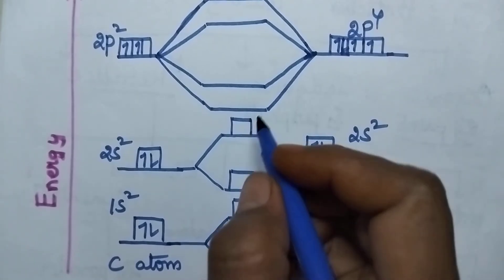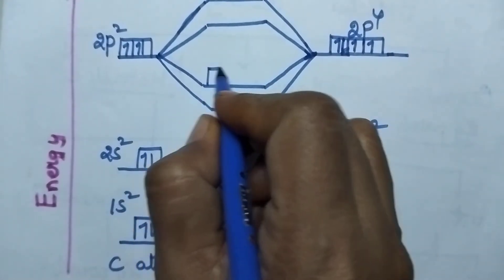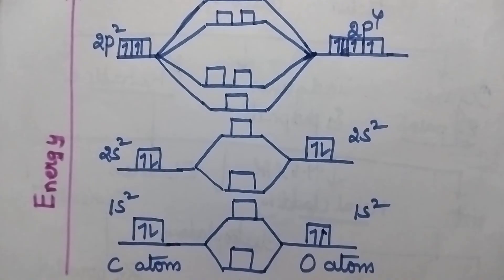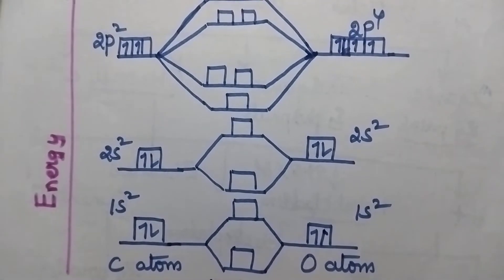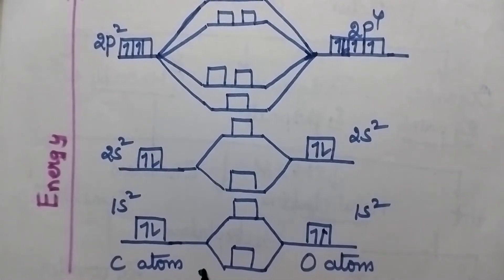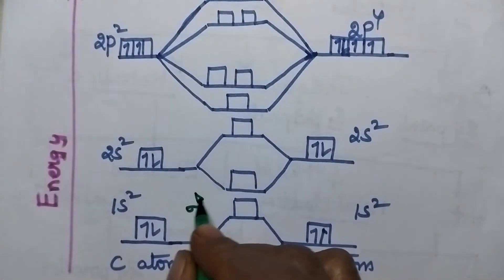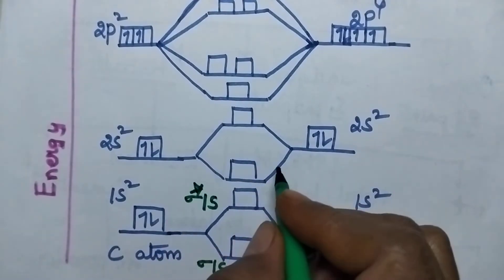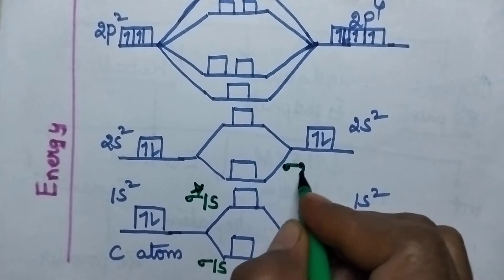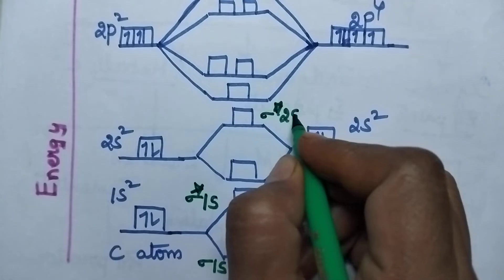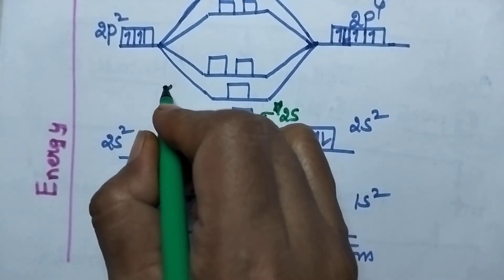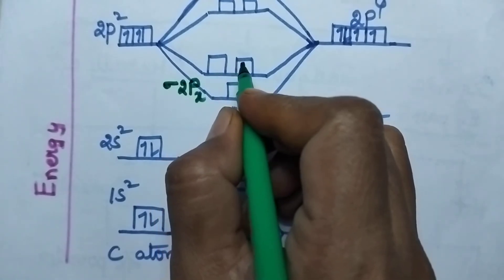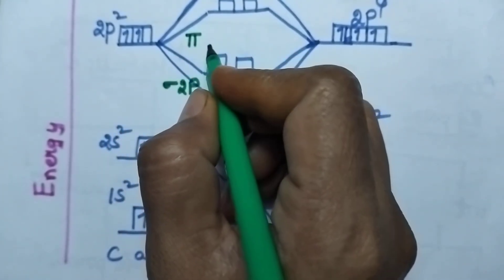Coming to the 2p orbitals, they combine and result in the formation of six molecular orbitals. The bonding molecular orbital is represented as sigma 1s and the antibonding molecular orbital is represented as sigma star 1s. The bonding molecular orbital for 2s is represented as sigma 2s, and sigma star 2s is the antibonding counterpart. The sigma 2px molecular orbital is formed, and 2py and 2pz orbitals have the same energy, always resulting in the formation of a pi bond.